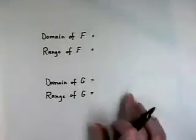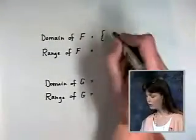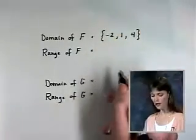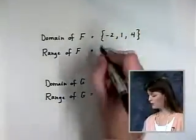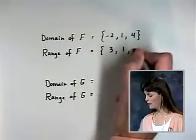So, in doing that, we are going to look at the domain of F and list it as the set which includes the values -2, 1, 4. The range of F will be its y values. In this case, we have 3, 1, -1.